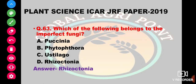Which of the following belongs to the imperfect fungi? The options are Paxenia, Phytophthora, Aspergillus, or Rhizoctonia. The answer is Rhizoctonia. Imperfect fungi are those that have no identified or defined sexual reproduction cycle.